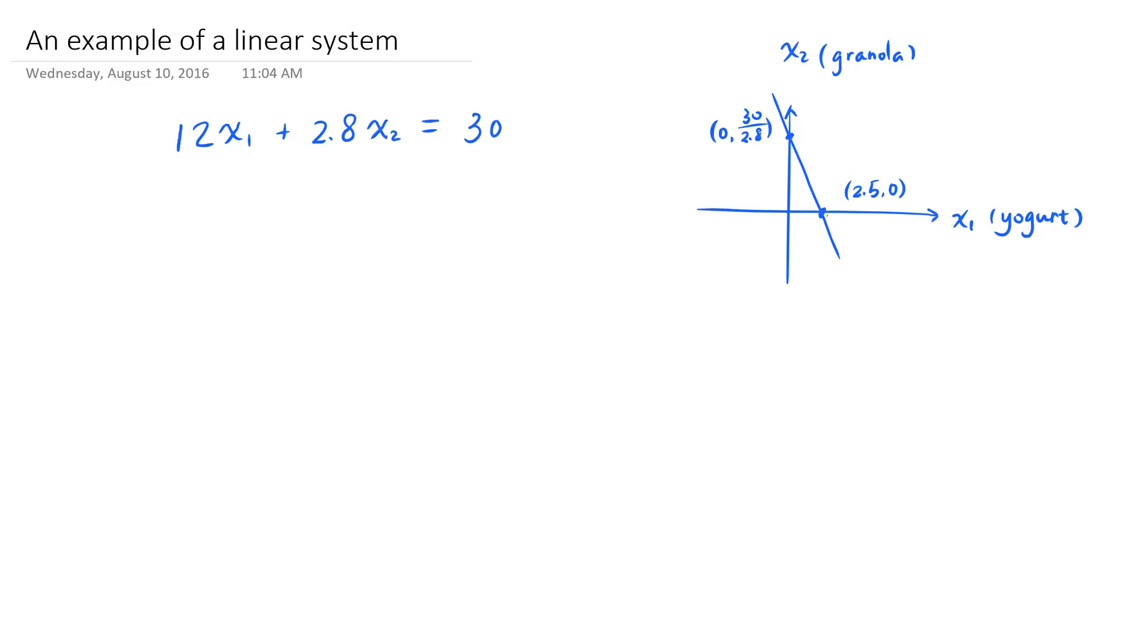So which one of these infinitely many solutions do I actually want for my breakfast? This is where I need an extra constraint to help me make the decision. And the constraint is that I want my breakfast to be balanced.